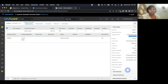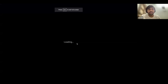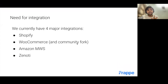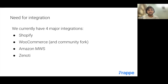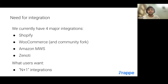We currently have four major integrations that we officially support: Shopify, WooCommerce, Amazon MWS, and Xenoti. Xenoti is quite recent; the other three are actively worked upon and still receive fixes and new features. These are also moving from core to separate apps. What we've noticed on GitHub issue pages and community forums is that people always want more — there is always an N+1 integration requirement.